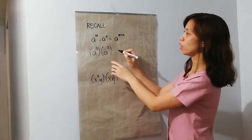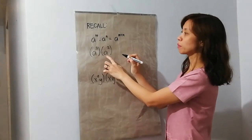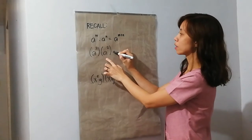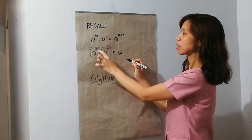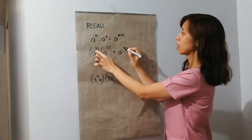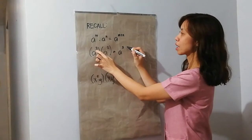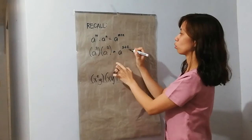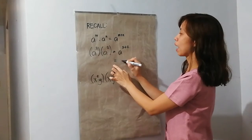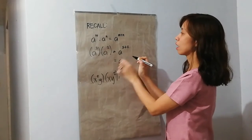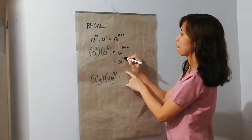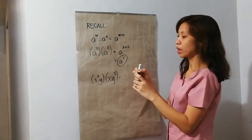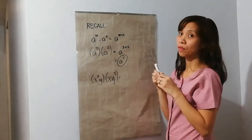Let us have this example. a cubed times a squared. We have the same base. Copy the base. And then add the exponents which are 3 and 2. So, we have a raised to 3 plus 2 is 5. So, we have a raised to the 5th.